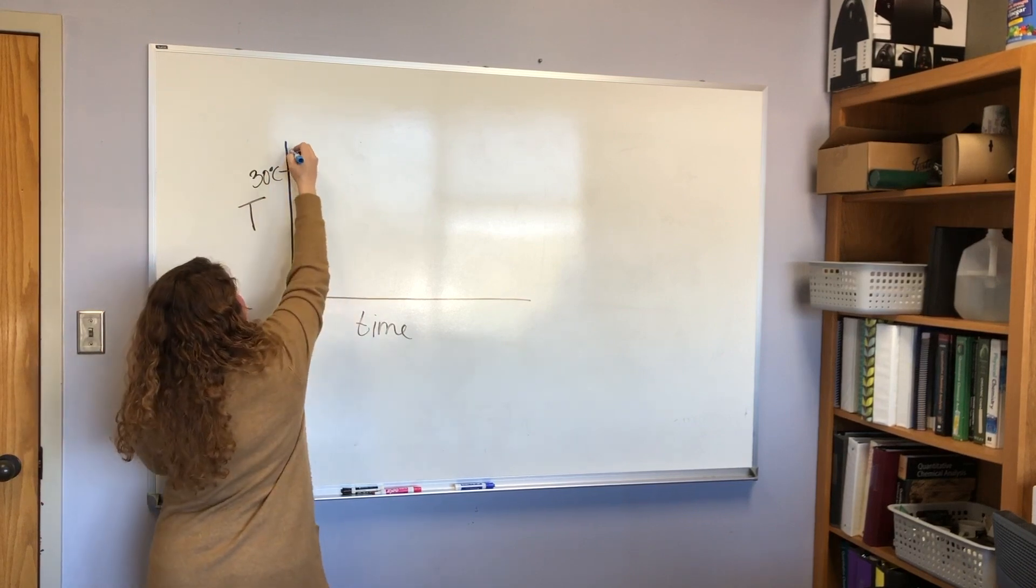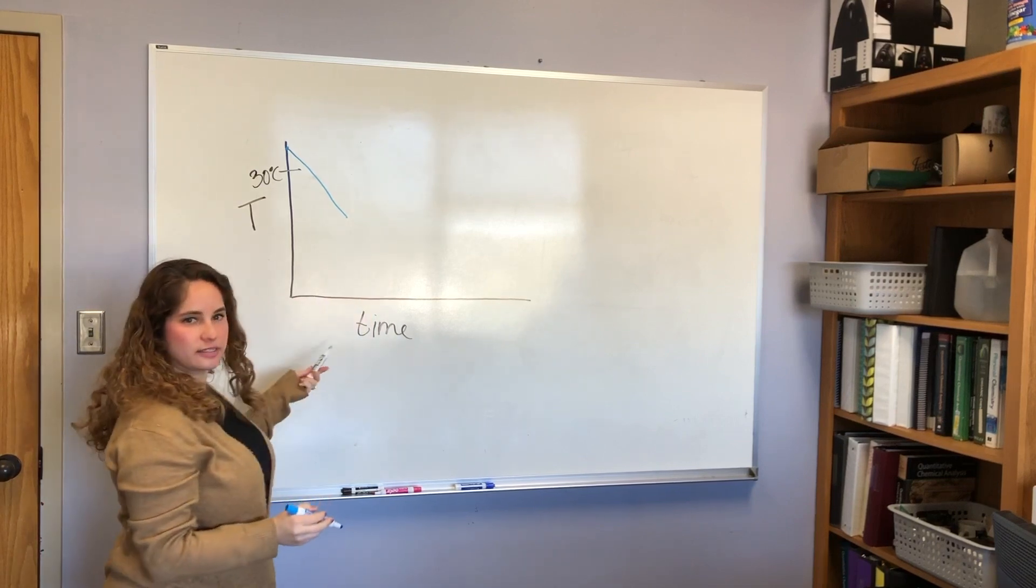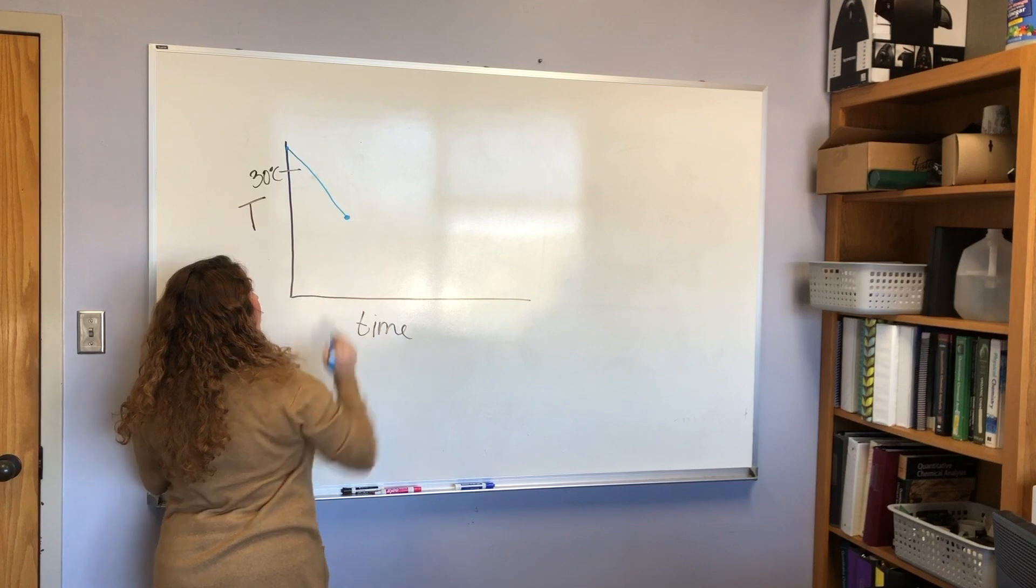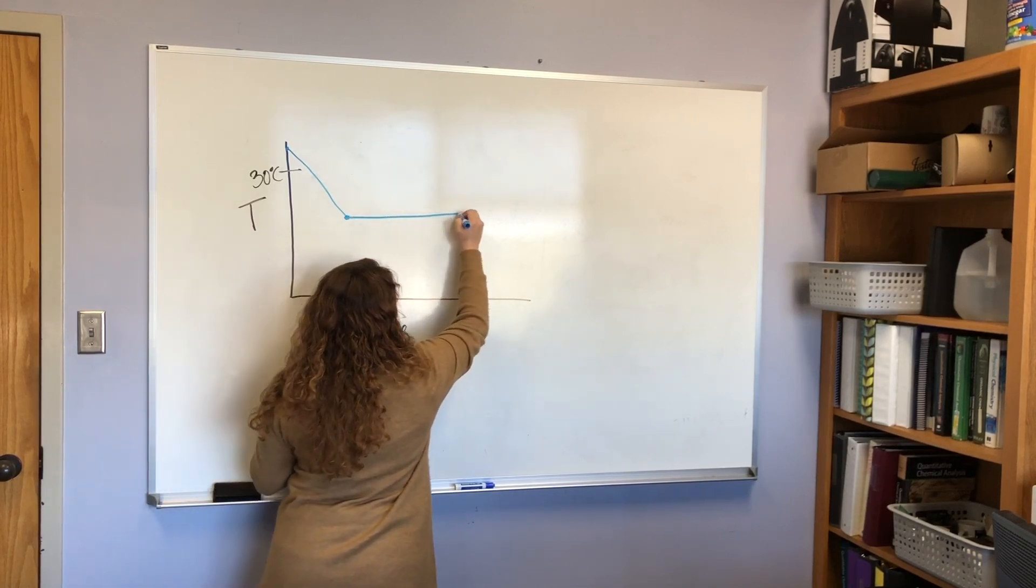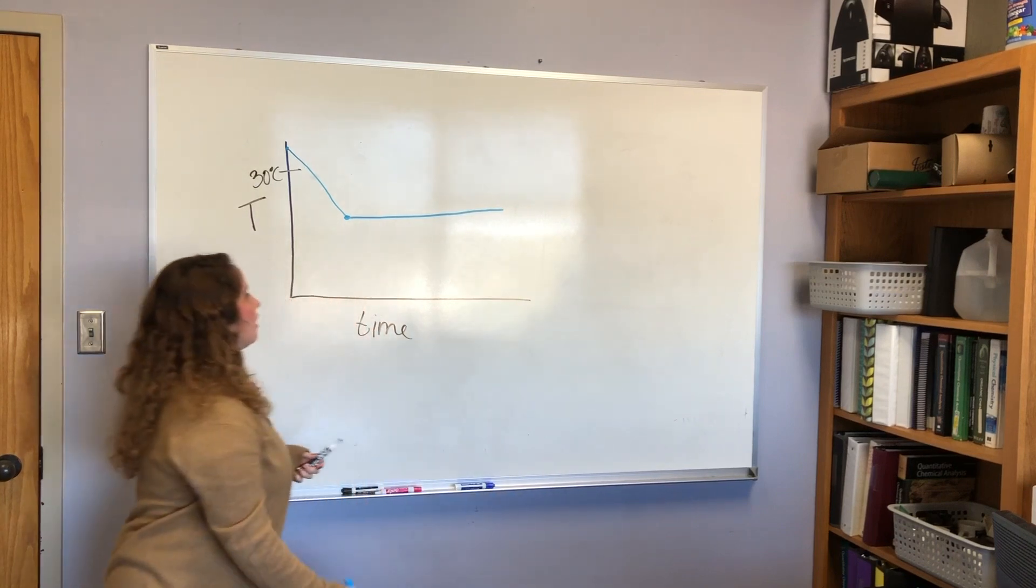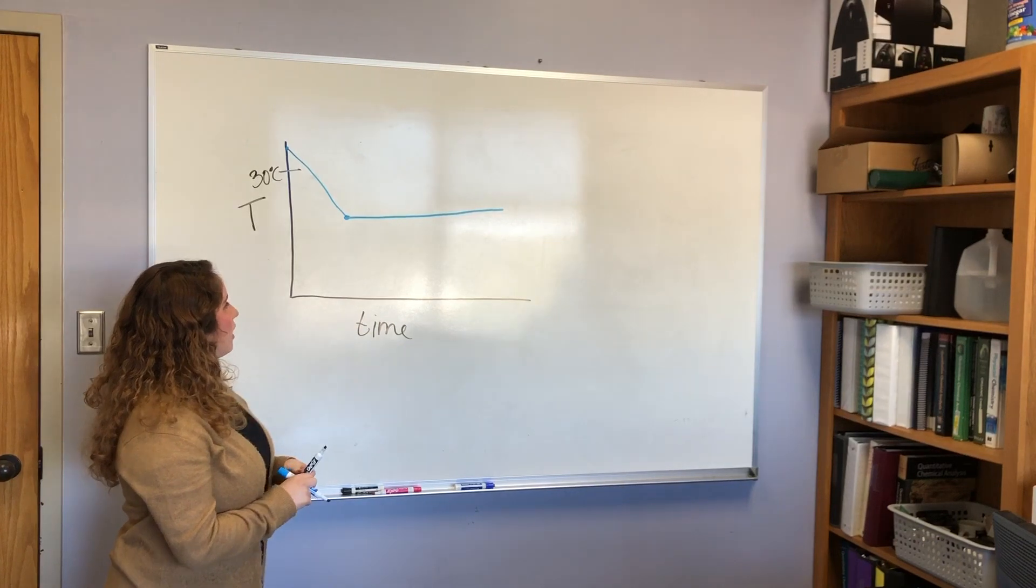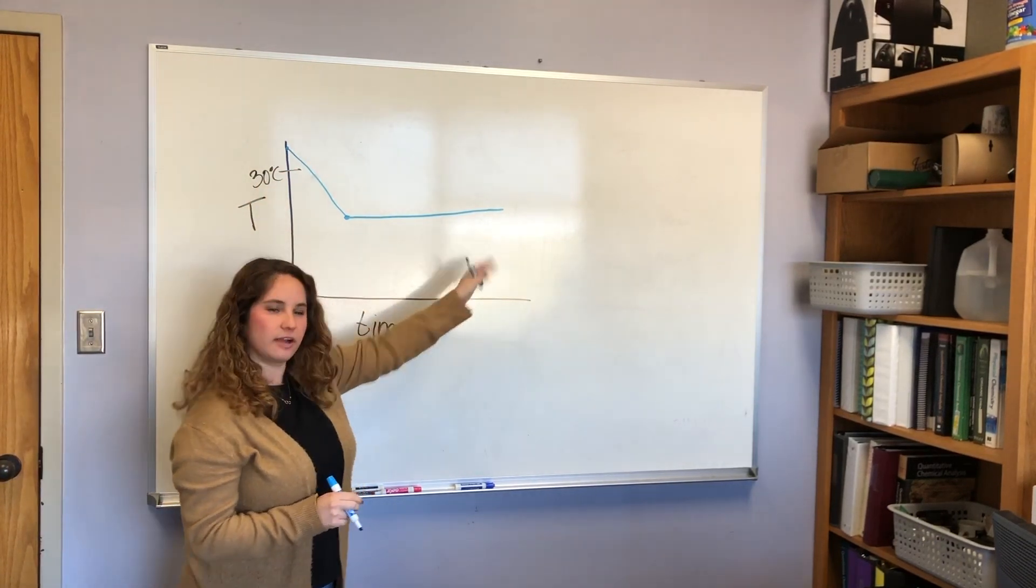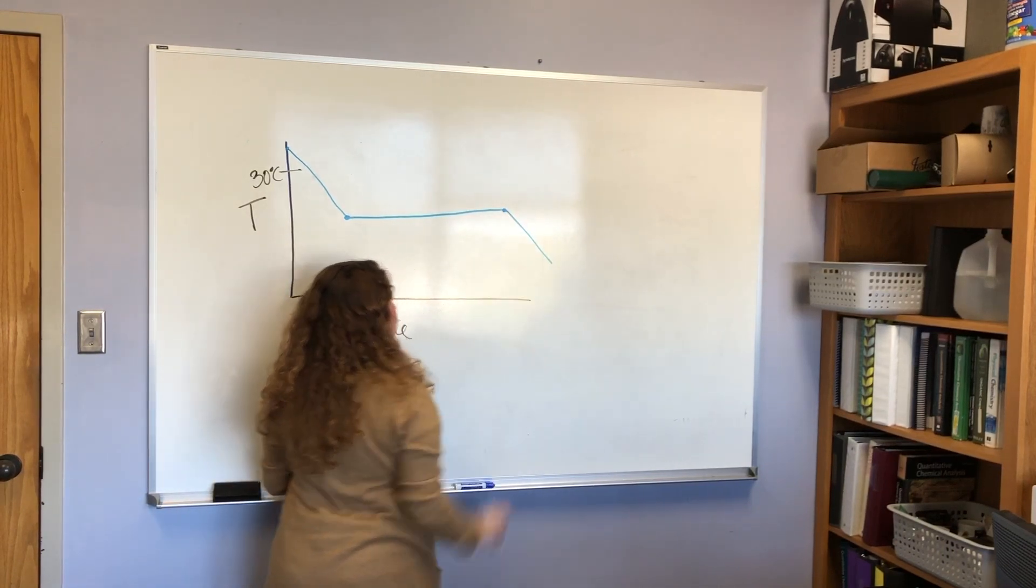So with your cyclohexane, what we would expect to see in a perfect world with no outside variables is starting at some temperature. In your lab manual, it says it needs to be above 30 degrees C. So some temperature, you're going to have your cooling curve. This is just the cyclohexane getting cold because you're putting it into an ice bath. And then at its freezing point, which you will measure, it should flatten out.